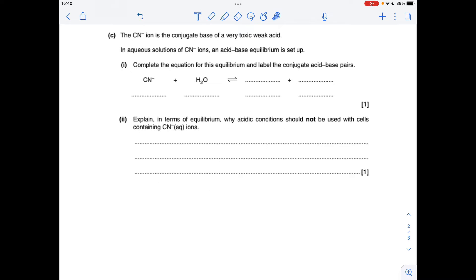Moving on to part C, so we're told that the cyanide ion is a conjugate base of a very toxic weak acid, so this is a base that's going to accept a proton from the H2O, so it's going to become HCN, hydrogen cyanide, which is that very toxic weak acid, so what's left of the H2O is OH minus.